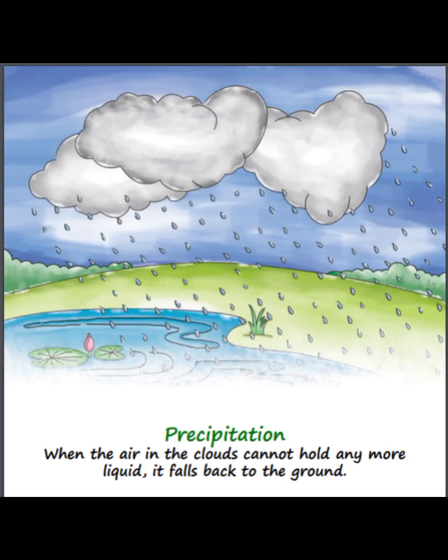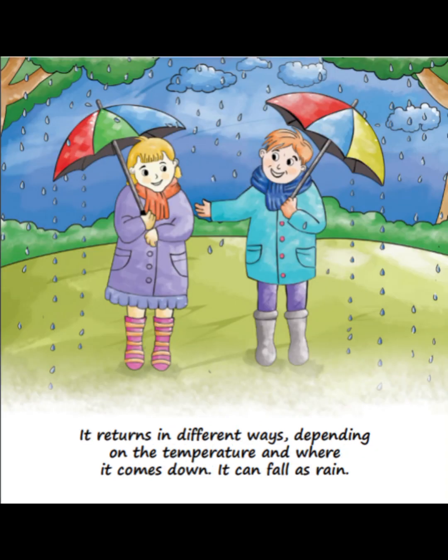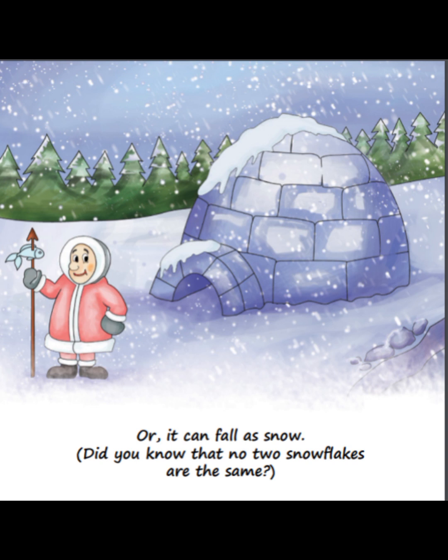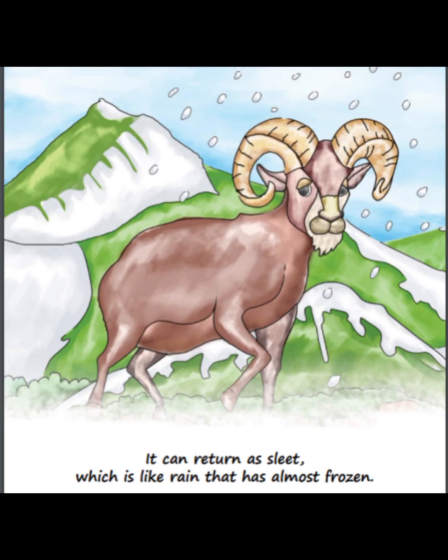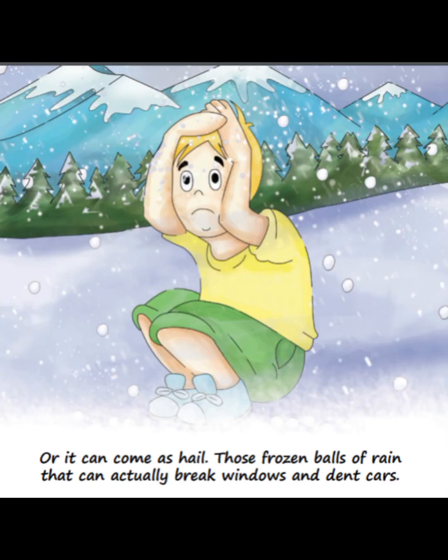Precipitation: when the air in the clouds cannot hold any more liquid, it falls back to the ground. It returns in different ways depending on the temperature and where it comes down. It can fall as rain or as snow — did you know that no two snowflakes are the same? It can return as sleet, which is like rain that has almost frozen. Or it can come as hail — those frozen balls of rain that can actually break windows and dent cars.